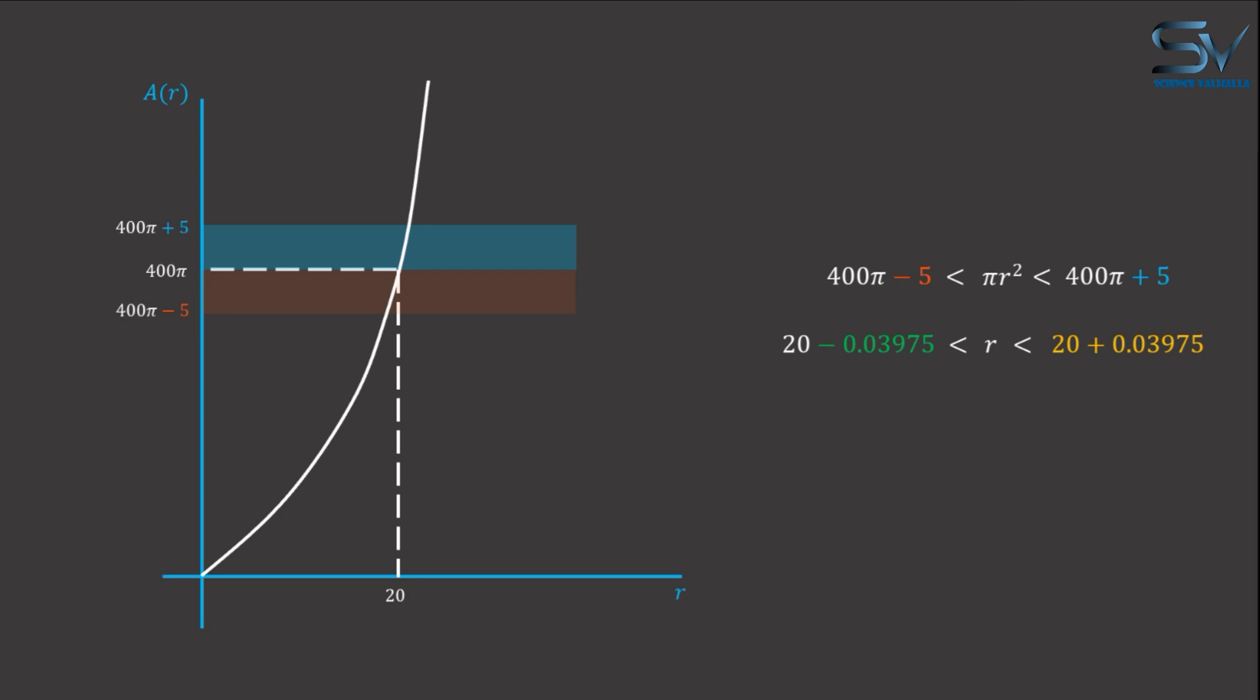These are horizontally shaded areas that show the range of the area. The vertical shaded areas show the corresponding range of radii for this allowed error.